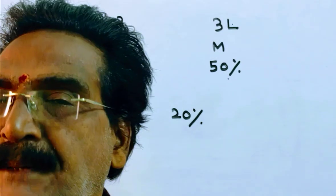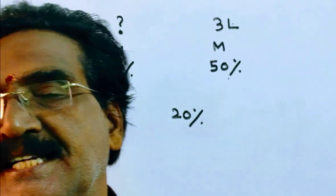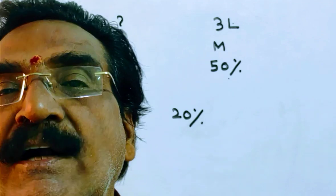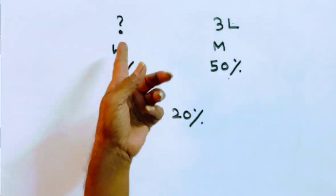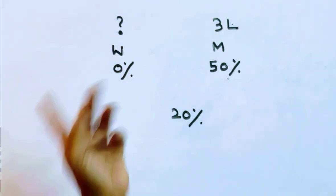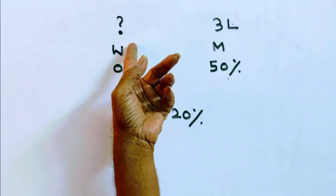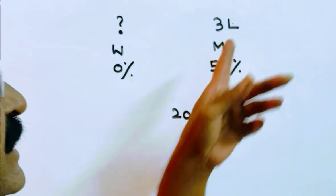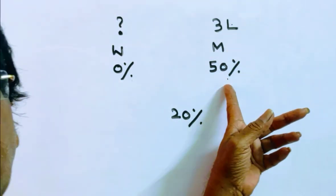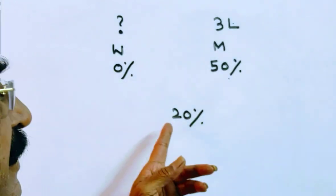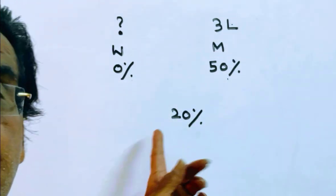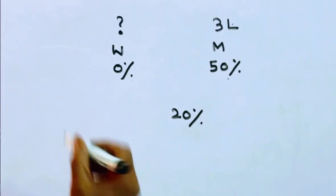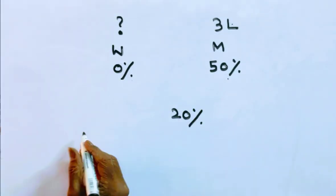This problem can be solved by applying the rule of allegation. By applying the rule of allegation, we get the quantities ratio. Water is the cheaper quantity — milk is 0% here. The dearer quantity has milk at 50%. In the final mixture, milk is 20%, which is the mean quantity.